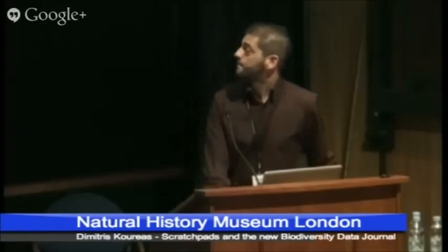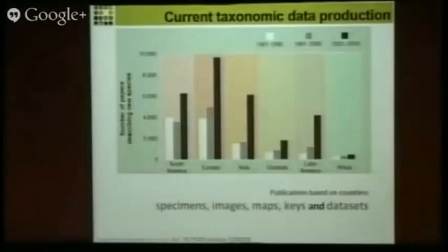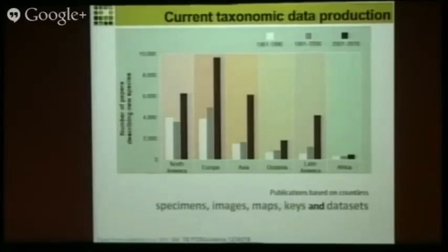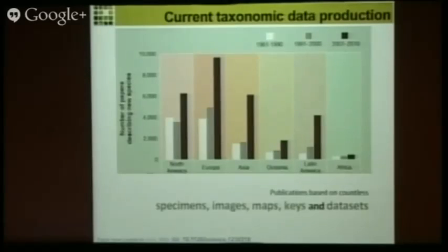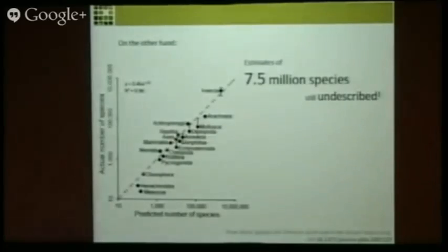With up to 2 million species already described, taxonomic data production is increasing rapidly, with countless specimens, images, maps, keys, and essentially datasets underpinning all these publications. If we put that into perspective — we still have to describe around 8 million species — what we can expect is this volume of data to increase more rapidly than ever before.